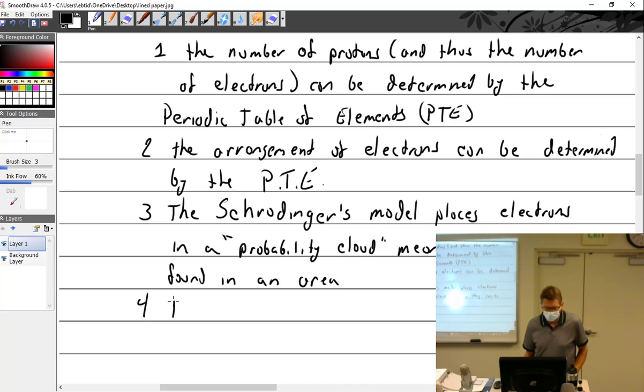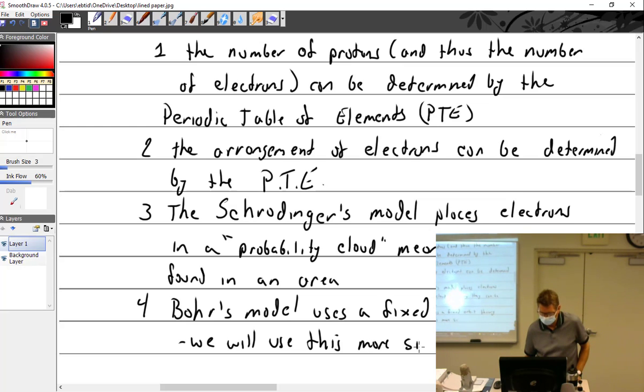So Bohr's model uses a fixed orbit trajectory. We will use this more simplistic theory. There we go. All right, that brings us to break time.